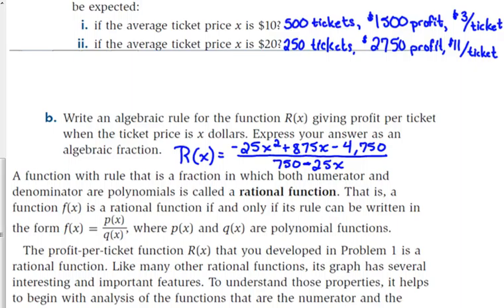In part A, it asks you to find profit per ticket if the average ticket price is $15. Then you would sell 500 tickets, you would earn $1,500 in profit, and that works out to about $3 in profit per ticket.